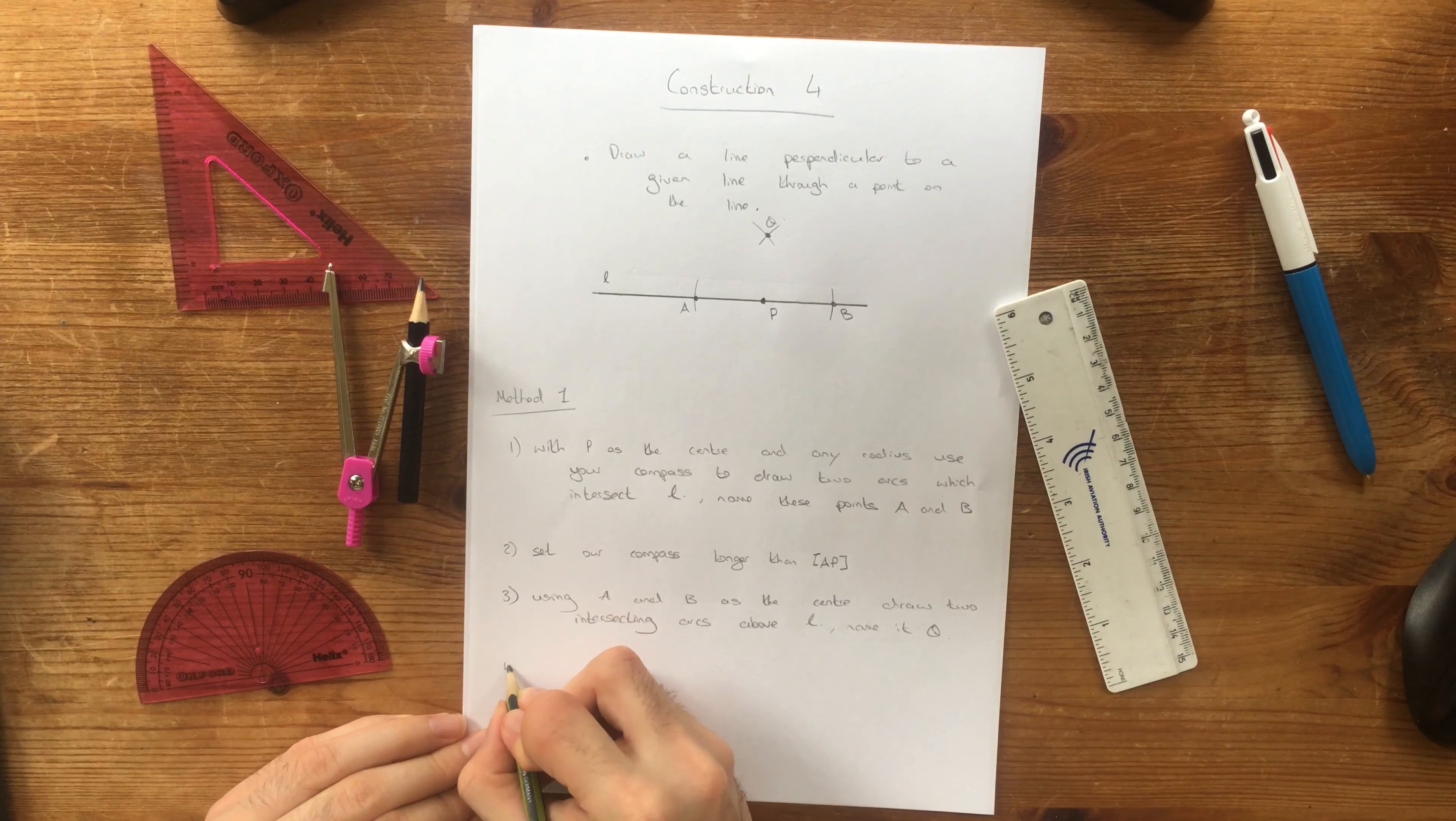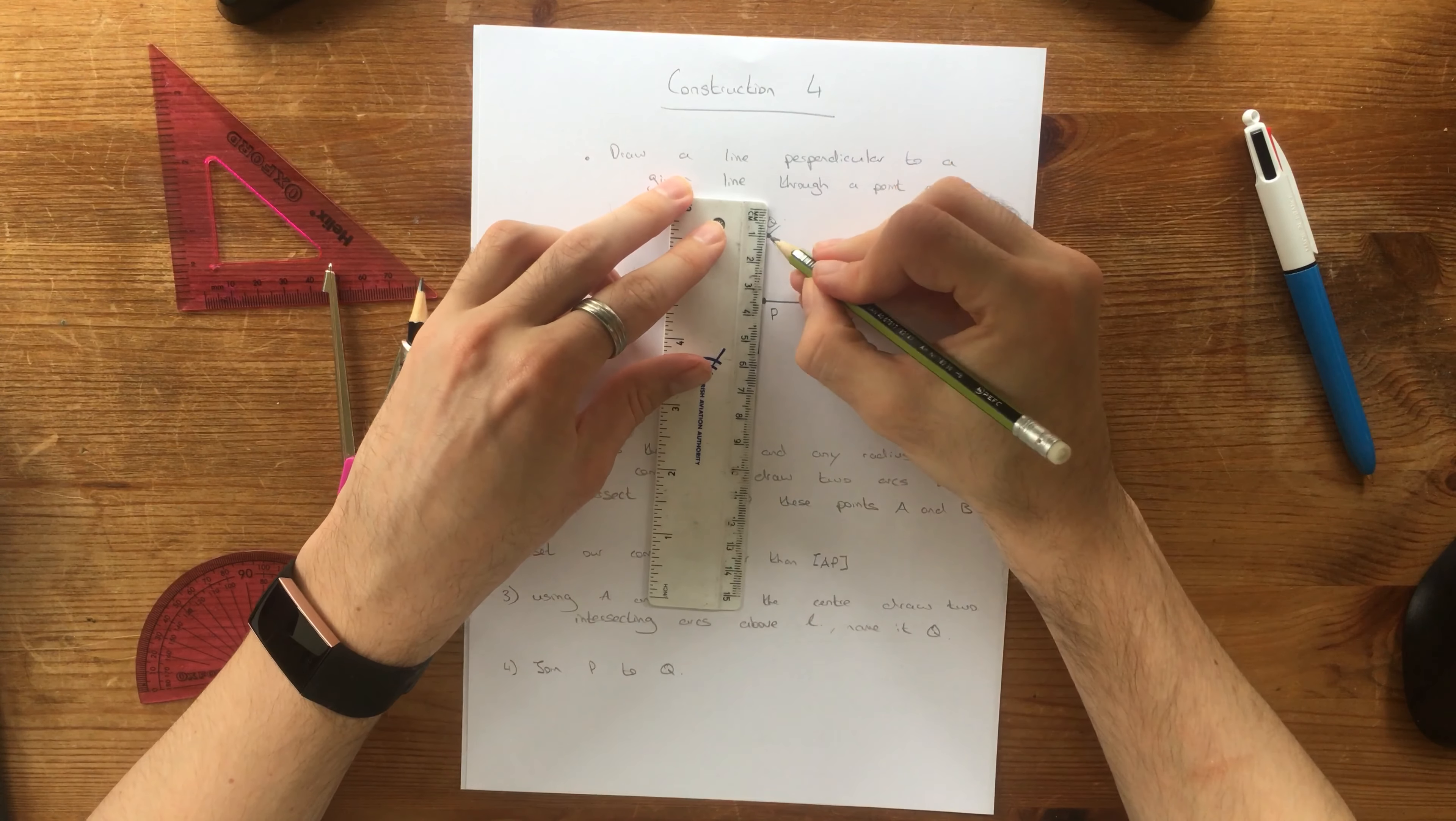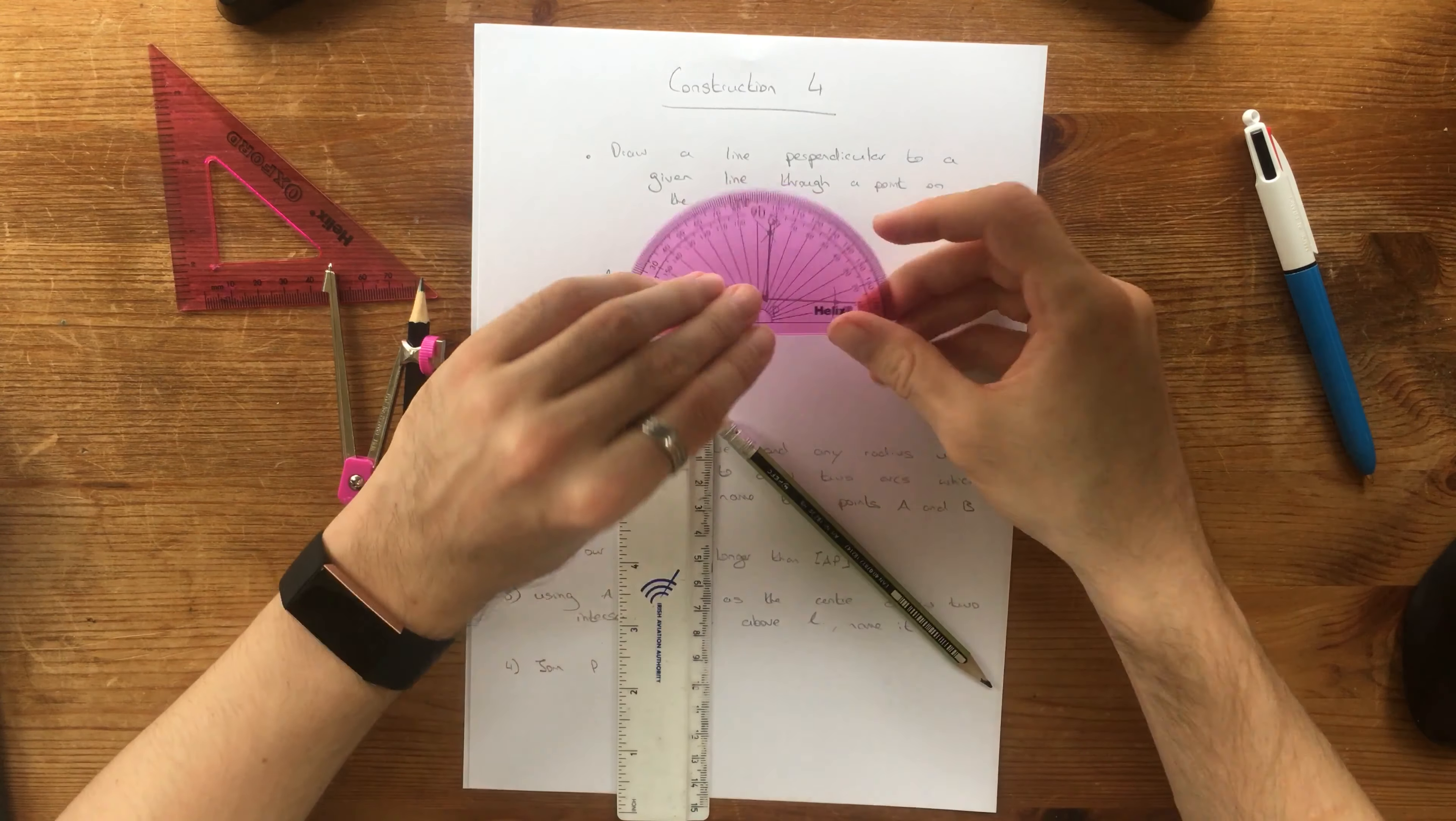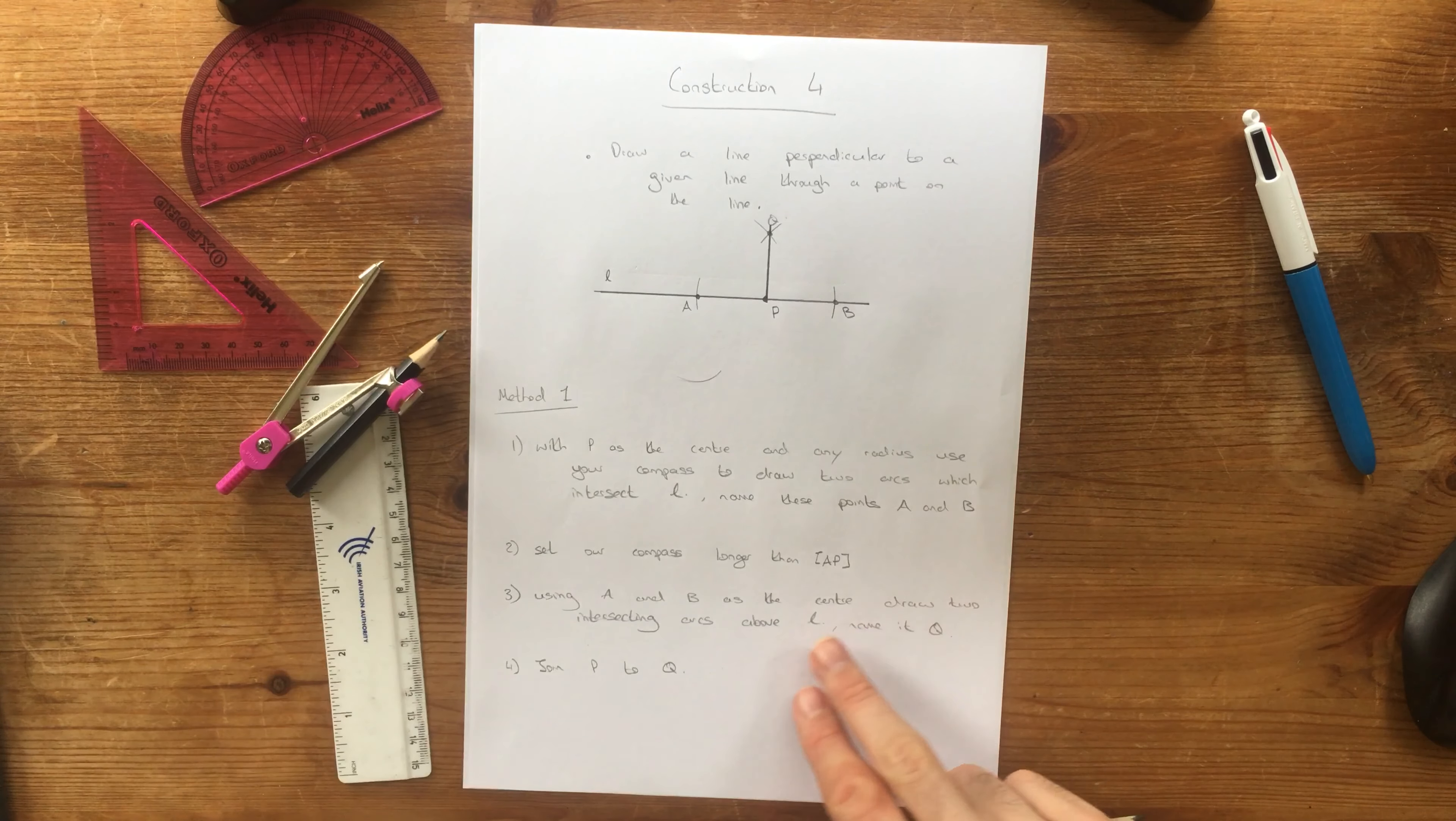And now step four, join P to Q. So using our ruler, we're just going to line up, and there we go. So there we have a perpendicular line. It's exactly 90 degrees. We can check that. And that is exactly 90 degrees to the point P on the line L. So that's method one.